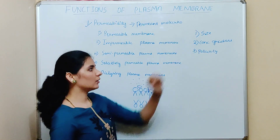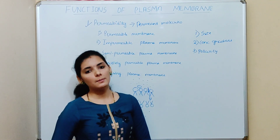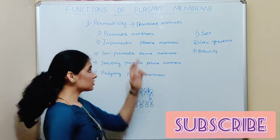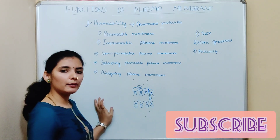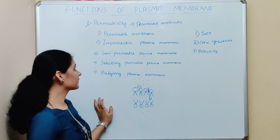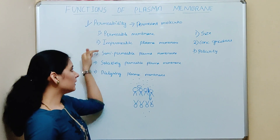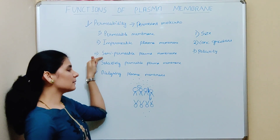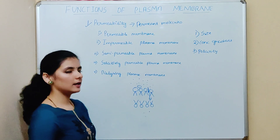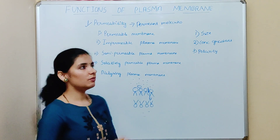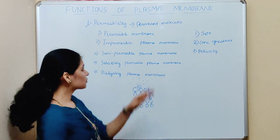That is regarding the polarity of the permeate molecule and the permeability function. Based on this permeability, there are mainly five types of plasma membrane: permeable membrane, impermeable membrane, semi-permeable membrane, selectively permeable membrane, and dialyzing plasma membrane. We will discuss all these types one by one.